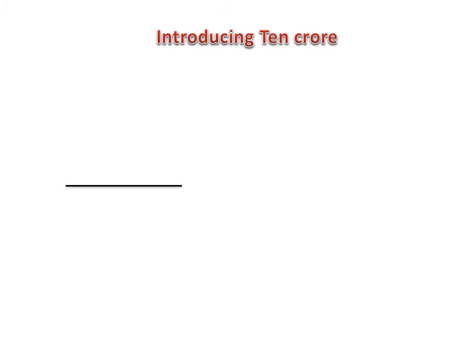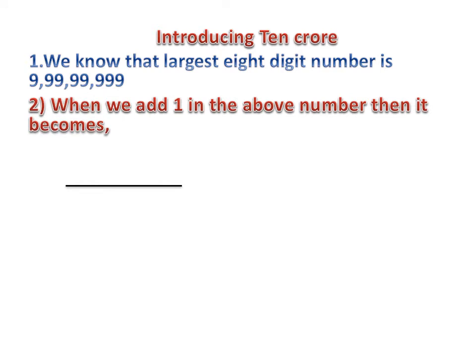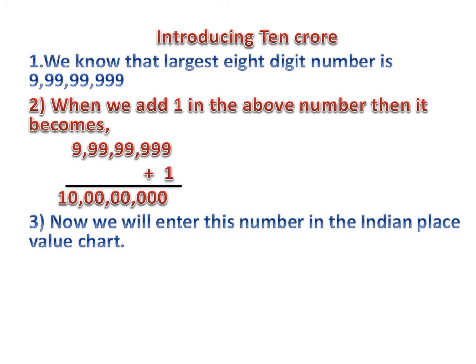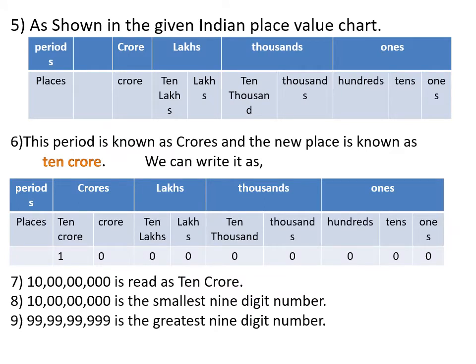Now I am introducing ten crore. We know the largest eight digit number is nine crore ninety-nine lakh ninety-nine thousand nine hundred and ninety-nine. When we add one to this number, it becomes a nine digit number. We enter this number in the Indian place value chart by adding one more column to the left. As shown in the table, there is already one blank space and the crore place is filled.